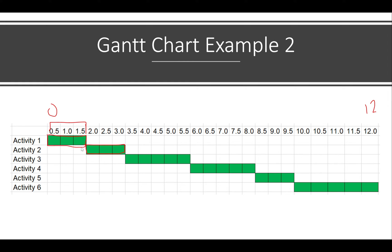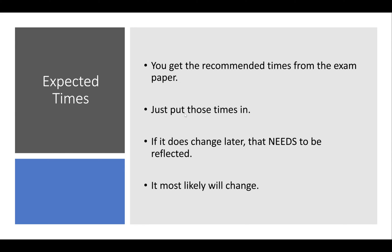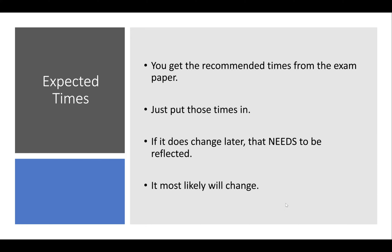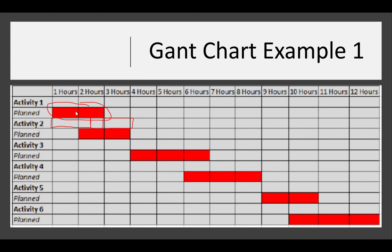These timings aren't random — they come exactly from the exam paper, which I'll explain when we reach that section. Times will likely change; you won't stick to them rigidly as some people go over and some go under. You'll have two Gantt charts: one planned (before you start) and one actual (reflecting what really happened). On the chart, 'planned' sits above 'actual' for each activity, making it easy to compare the initial plan versus what occurred.